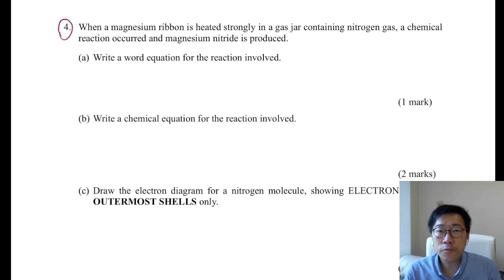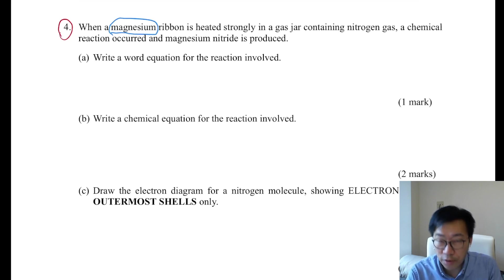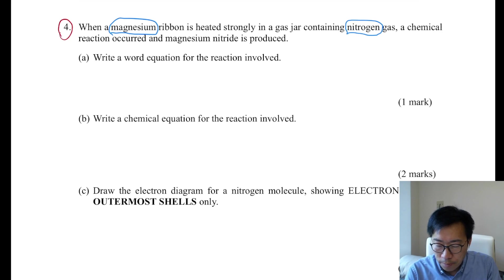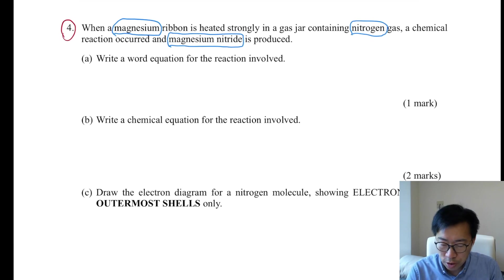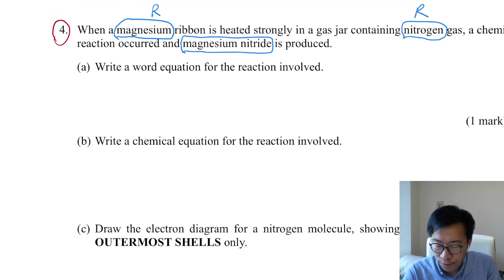This time it is really a structured question. When a magnesium ribbon is strongly heated in a gas jar containing nitrogen gas, a chemical reaction occurs and magnesium nitride is produced. So you extract the information: magnesium and nitrogen are two reactants, and magnesium nitride is the product.